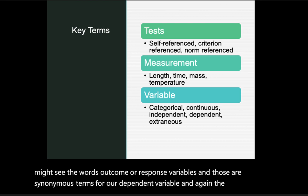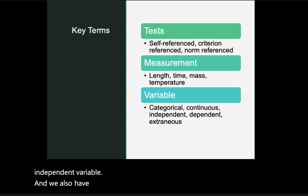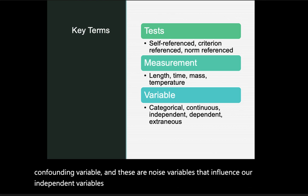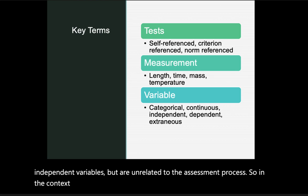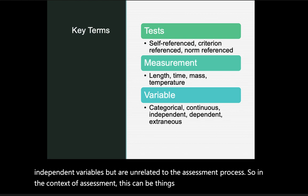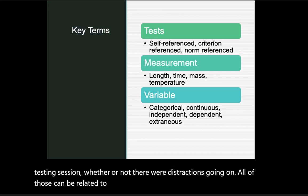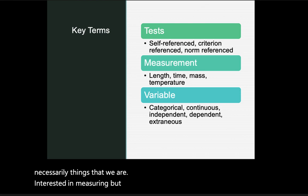The dependent variable is what we measure in response to changes in the independent variable. We also have extraneous variables, sometimes called confounding variables — these are noise variables that influence our independent variables but are unrelated to the assessment process itself. In a testing context, this can include things like the environment of a testing session or distractions that influence results without being what we intend to measure.